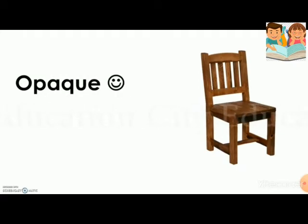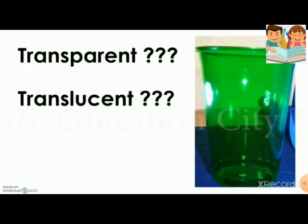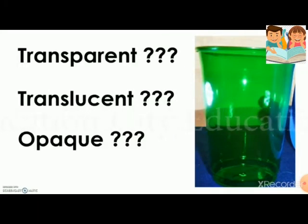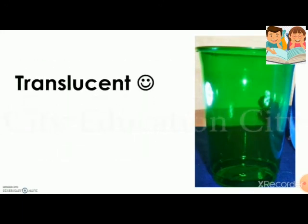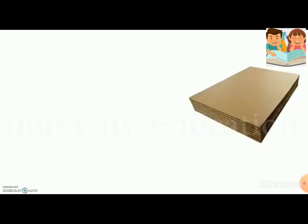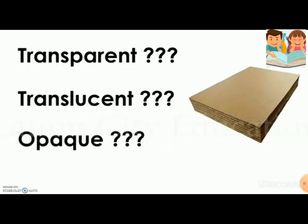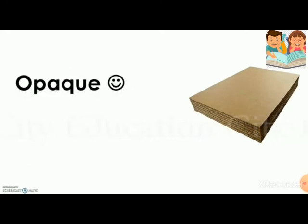Very good — it is opaque, because no light passes through a wooden chair. Next, how about this object? Is it transparent, translucent, or opaque? Excellent — it is translucent! Only some light passes through; it is kind of see-through but not so clear. Next, how about a cardboard? Is it transparent, translucent, or opaque? Very good — it is opaque; no light passes through.